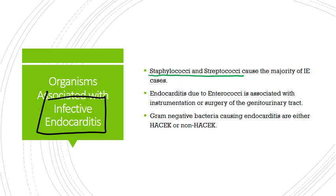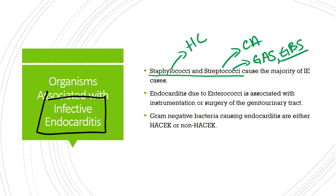Staphylococcal endocarditis is pretty much the most common cause of healthcare-associated infective endocarditis, where streptococcal endocarditis is typically more community acquired. When talking about streptococcal endocarditis, we're certainly talking about Group A strep like Strep pyogenes. We're also talking about Group B strep, which we'll cover more in the sexuality and reproduction block since it's most often discussed in maternal fetal medicine.